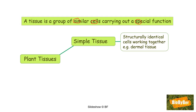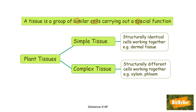Looking at plant tissues, there are two types. Simple tissues are made up of structurally identical cells working together — for example, dermal tissue, which is made of only one type of cell. Complex tissue is made up of structurally different cells working together — for example, vascular tissue such as xylem and phloem. Xylem and phloem are complex tissues.